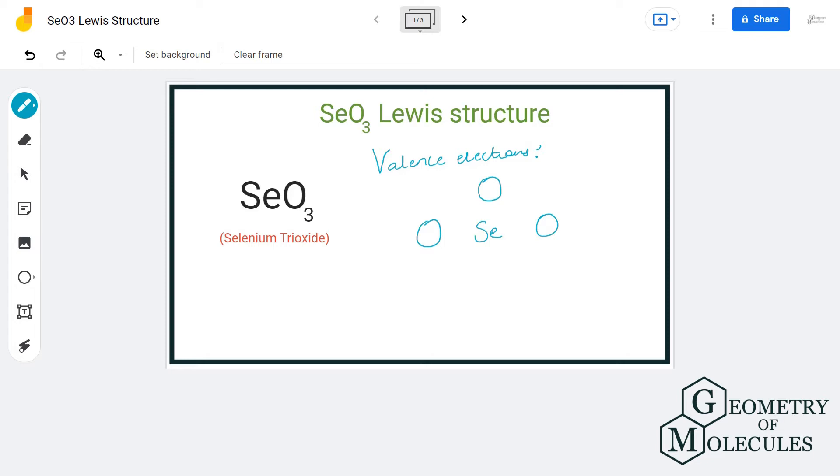Hi guys, welcome back to our channel. In today's video we are going to help you with SeO3 Lewis structure. It's a chemical formula for selenium trioxide, and to determine its Lewis structure we shall first look at the total number of valence electrons.